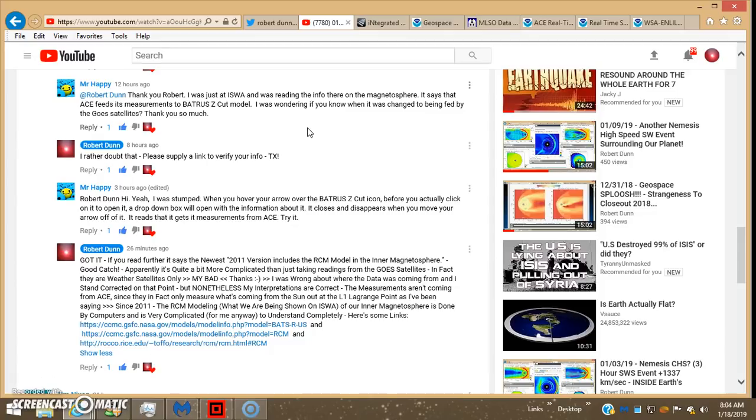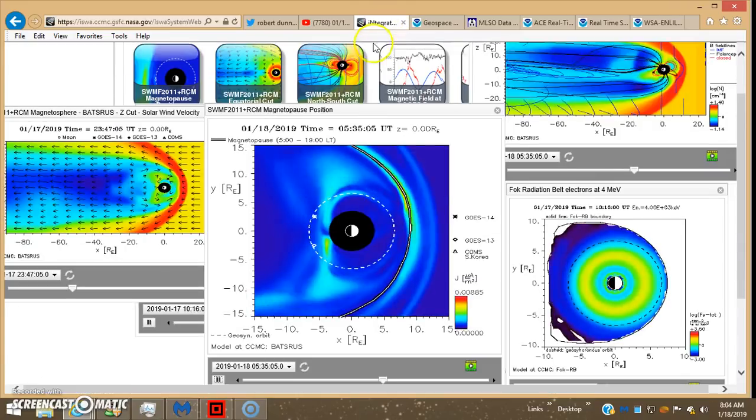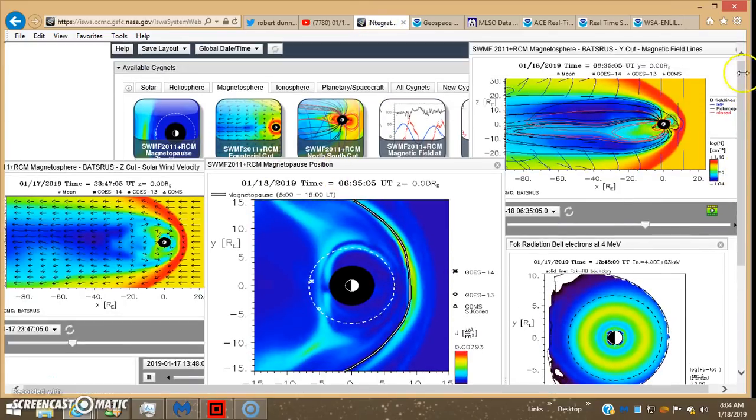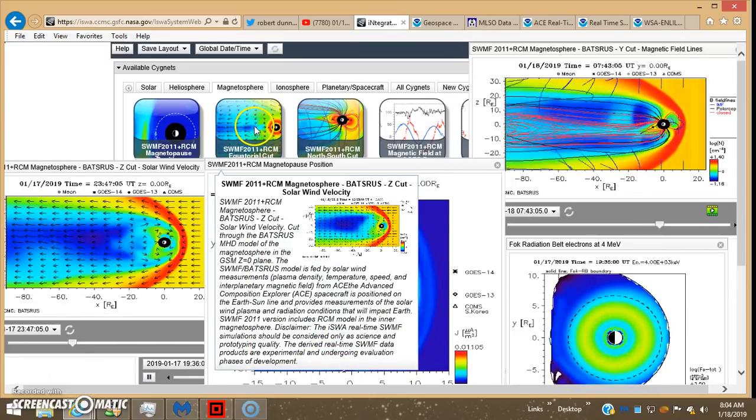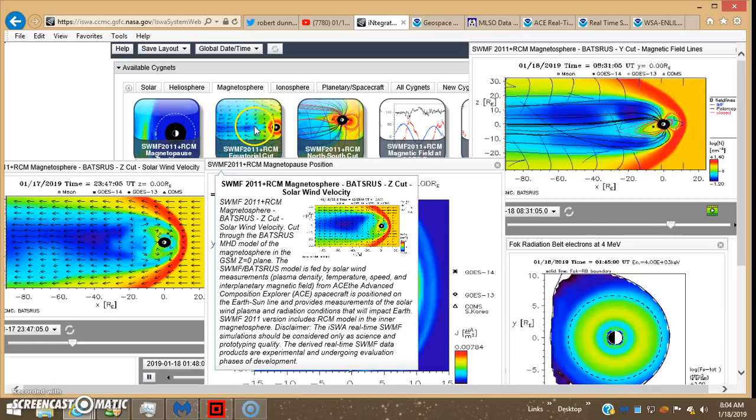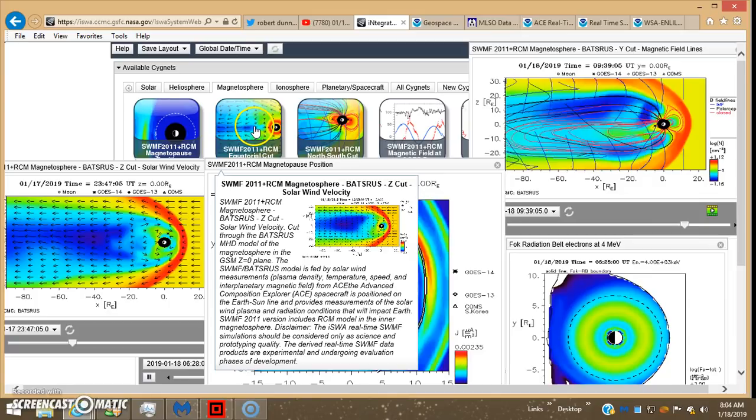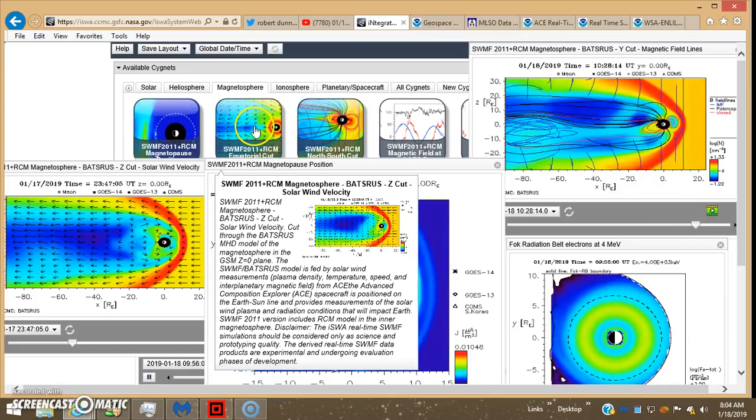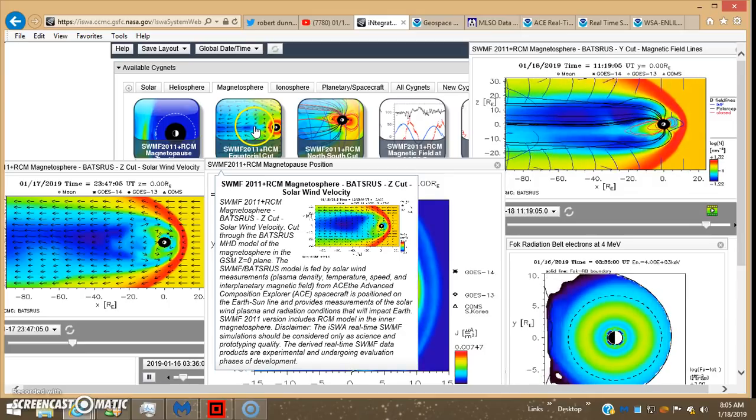Yesterday it was 2164 kilometers per second and I just assumed it was being measured by those ghost 13, 14, and 15 satellites, but apparently that's not true. Here's what he did - he went on to this ISWA site and if you drag your cursor over here, comes up with a little description box.